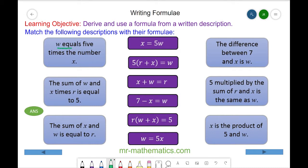We have w equals five times the number x, so w is equal to five times x. But in algebra we don't write the times symbol because we can confuse it with x, so w is equal to 5x. We can call this one A, and this one is also A.